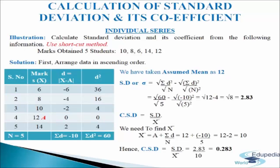We have to calculate standard deviation and its coefficient using the shortcut method. Marks obtained by 5 students: 10, 8, 6, 14, and 12. We will make a table of 4 columns. The first column has serial numbers 1 to 5, so n = 5. The second column has marks x in ascending order: 6, 8, 10, 12, 14. We have taken assumed mean a = 12.